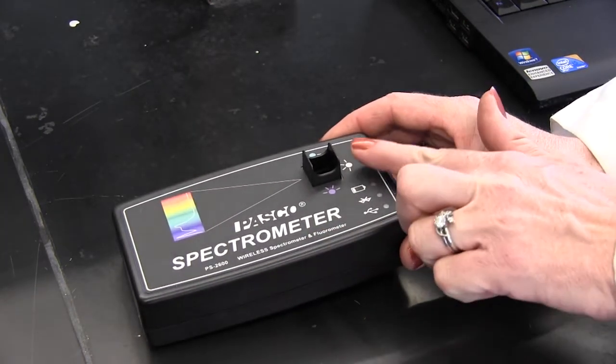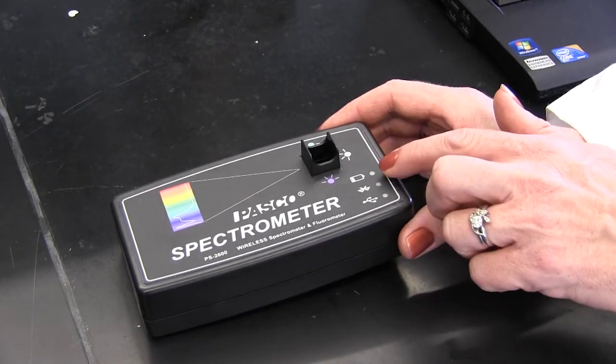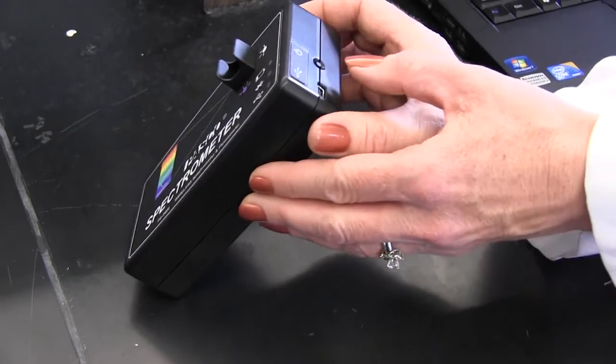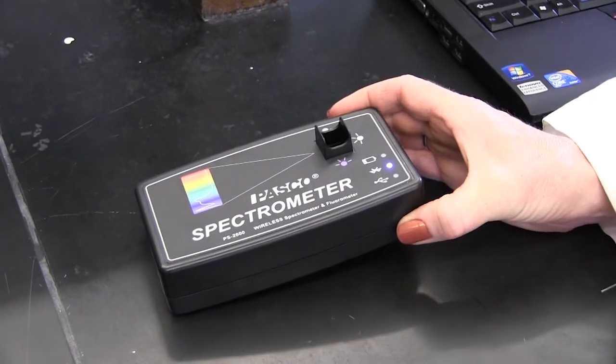It has an opening for a cuvette or for the fiber optic probe and you'll notice that there are three LEDs on the front face. In order to turn it on, you press and hold the power button until you see the LEDs start to illuminate.